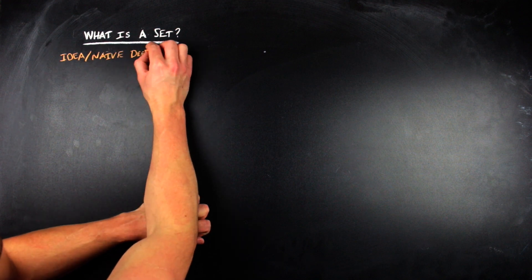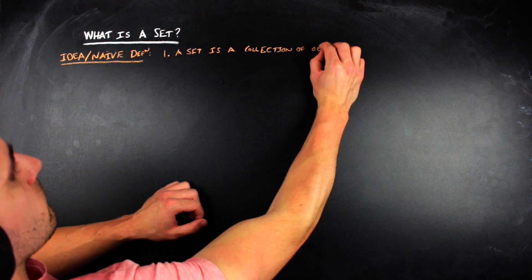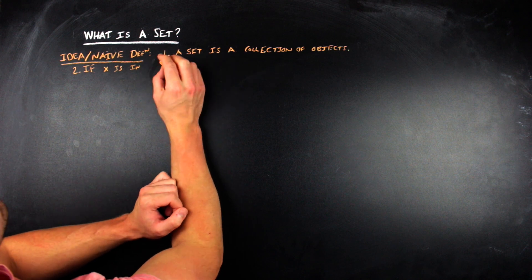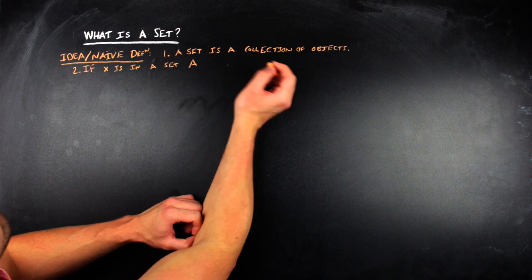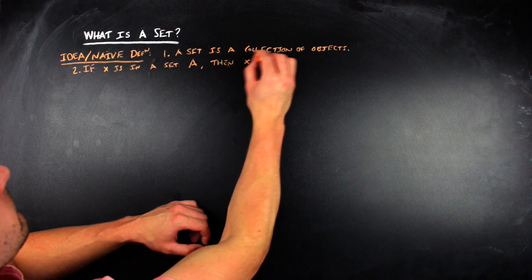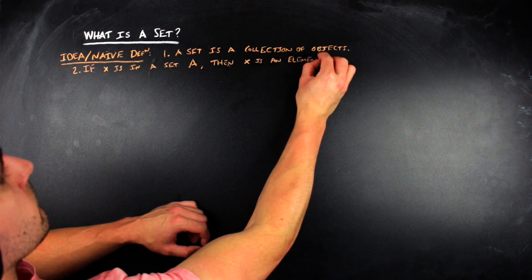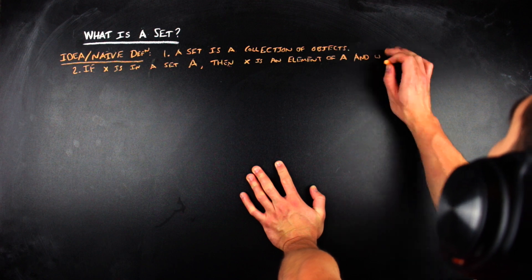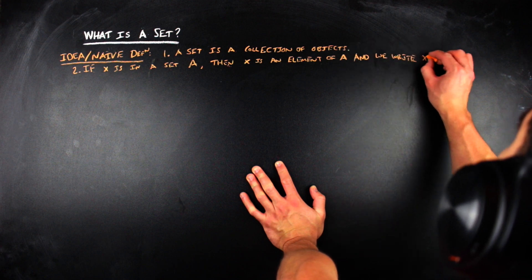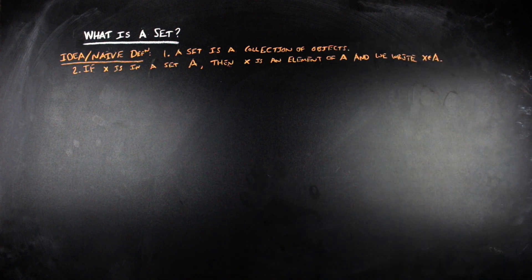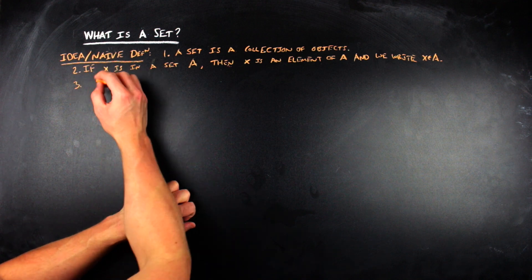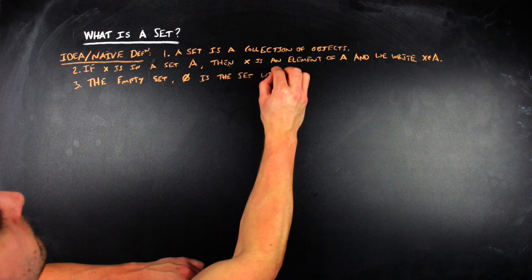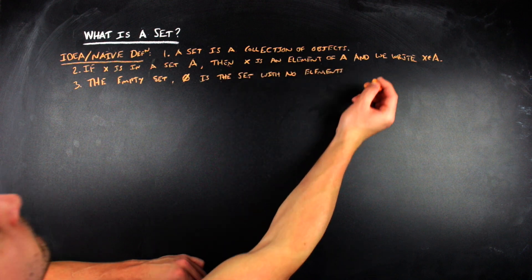So, first off, a set is a collection of objects, and so then once we have our collection of objects, we say that an element of a set is just something that is in the set. So if x is in the set A, then we say that x is an element of A, and we use this notation. It's just x, and then there's this stylized epsilon, which means in or within, and then you have the set that you're in. So, the empty set, which is denoted by a null, or just like a zero with a cross through it, is the set with no elements.